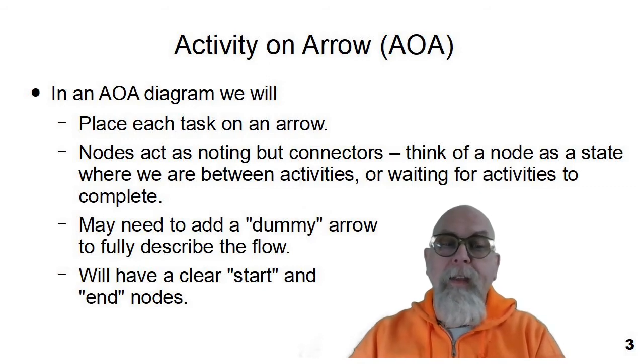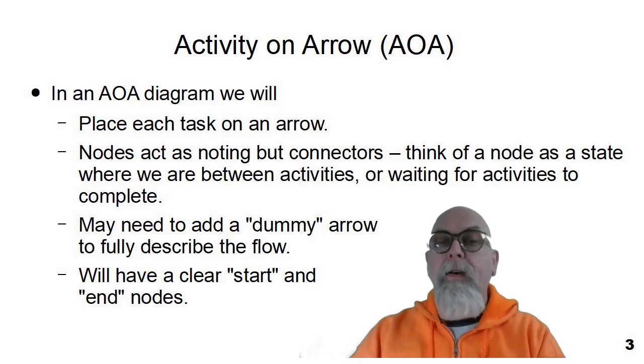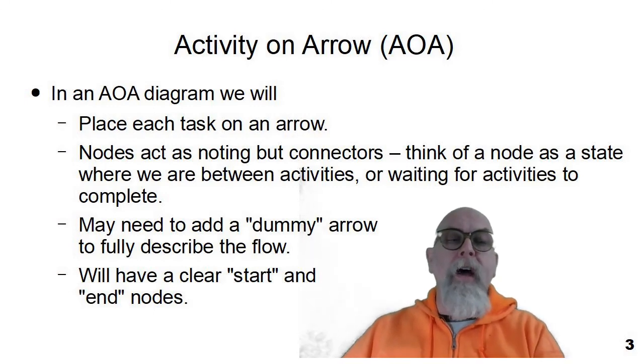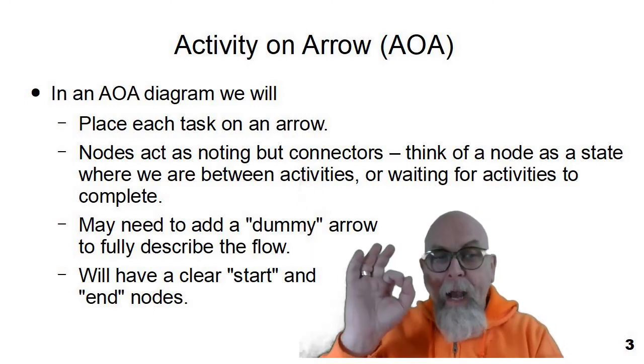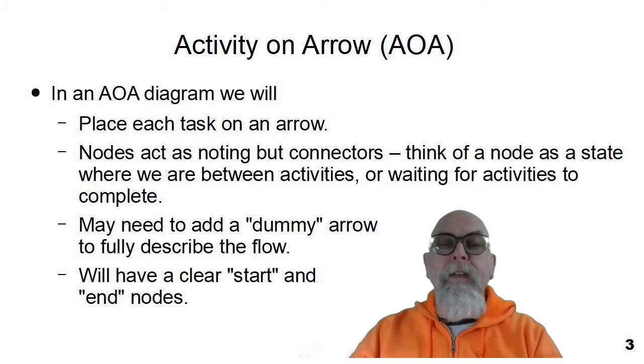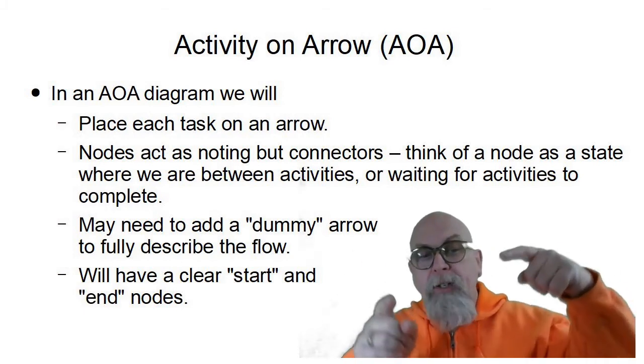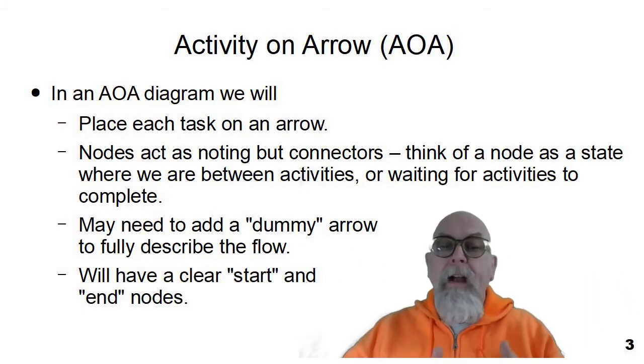You can take off on the arrows going on the next activity arrows. So each task is on an arrow. The nodes are nothing but connectors. You can think of a node or a connector as a state where all of the activities have finished and are waiting, and you're waiting for activities to complete before you go on to the next activity or group of activities.